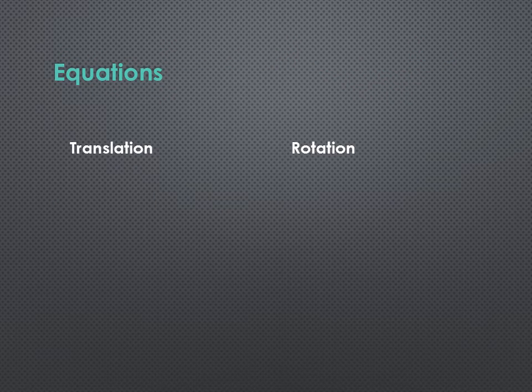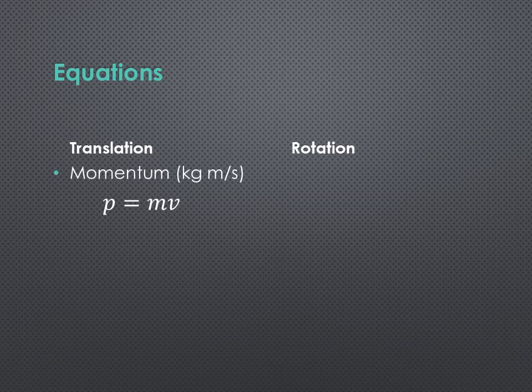Okay, we're going to get straight to our equations. Remember, in translation, momentum was just P equals MV, and P and V are both vector quantities, and our units were kilograms meters per second.